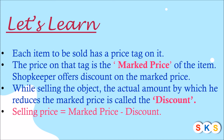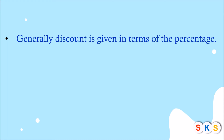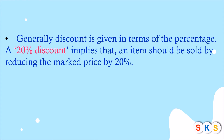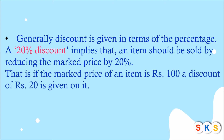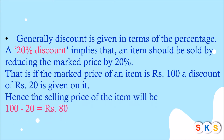Suppose the price marked on the article is rupees 100 and the discount given by the shopkeeper is rupees 10, so the selling price will be 100 minus 10, that is rupees 90. Generally, discount is given in terms of percentage. A 20 percent discount means the item should be sold by reducing the mark price by 20 percent — that is, if the mark price is rupees 100, a discount of rupees 20 is given, hence the selling price will be 100 minus 20, which equals rupees 80.